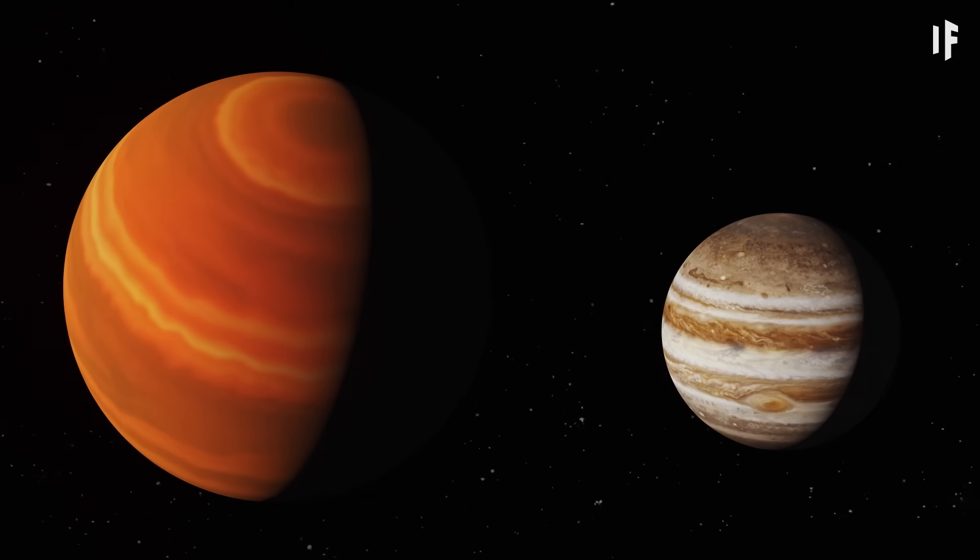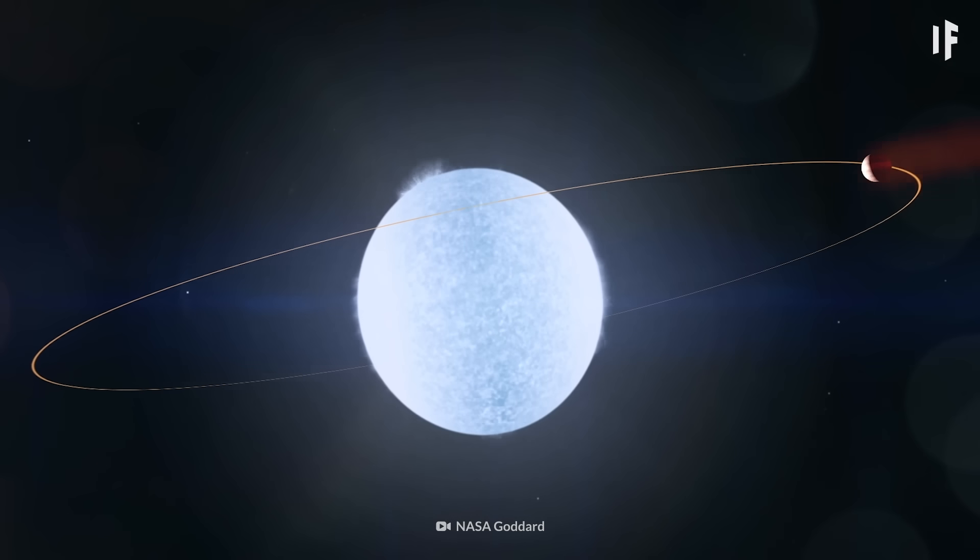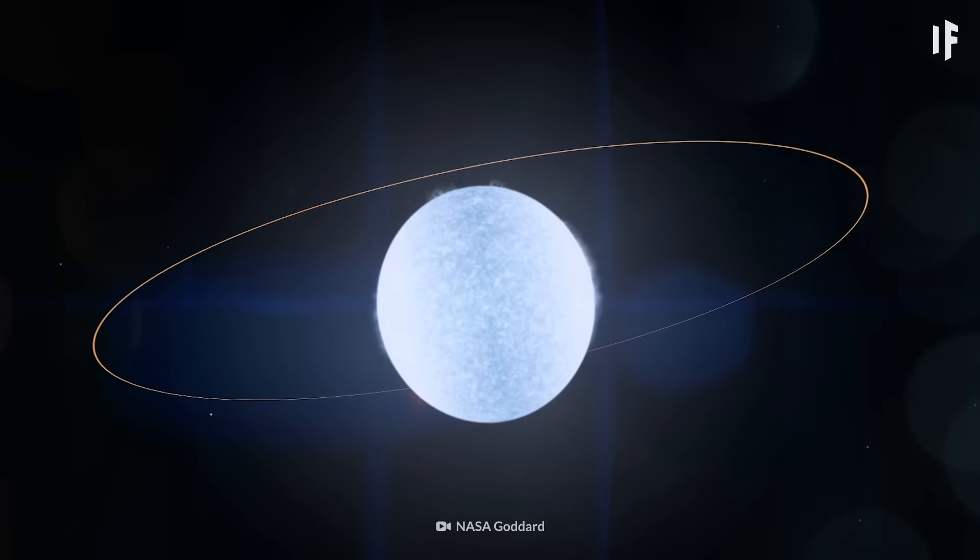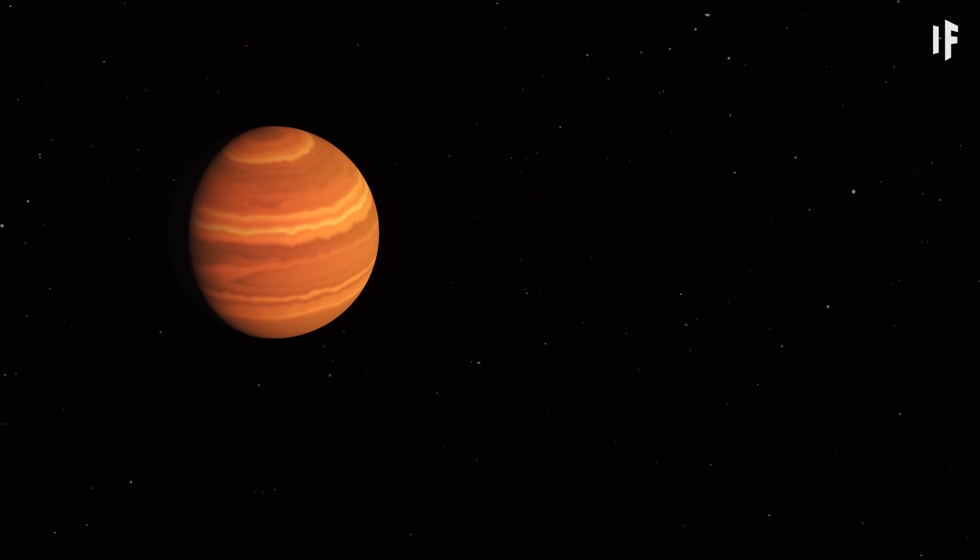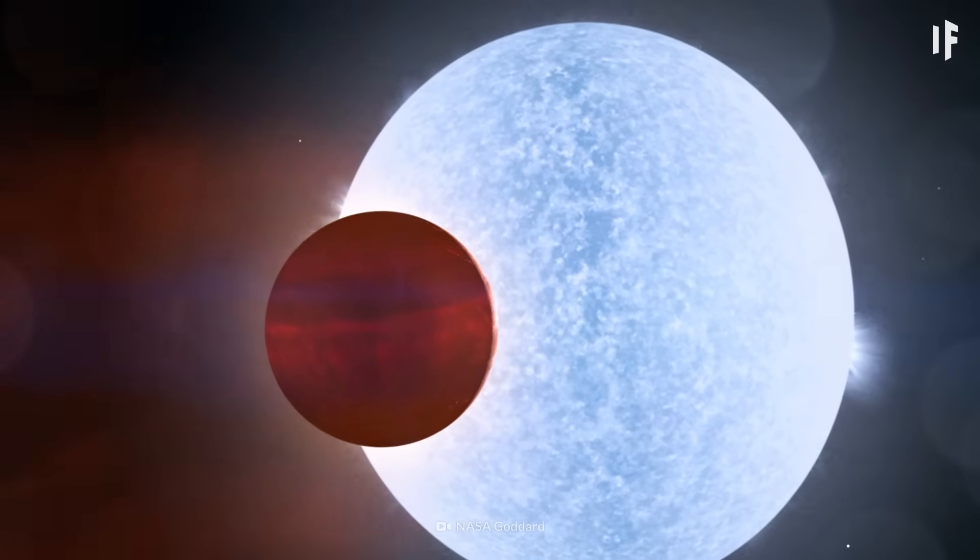This gas giant is almost three times more massive than Jupiter. It takes KELT only one and a half Earth days to speed through the orbit around its Sun. And just like HD 189733 b, it's tidally locked, with one side always facing the hot star.